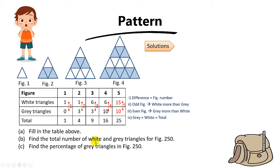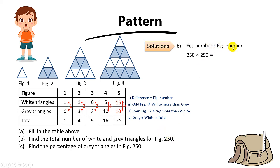For part B, we need to find the total number of white and grey triangles for figure 250. You cannot draw until figure 250 — I've heard some students actually did that in the exam, but it's not a wise idea since the number is too big. To find the total, since the total equals the square of the figure number, you take 250 times 250 to get 62,500.